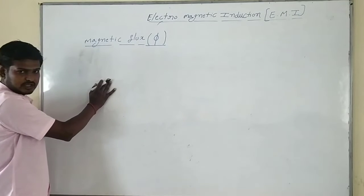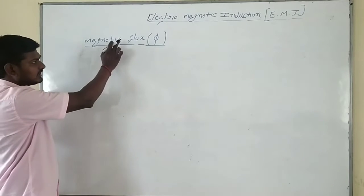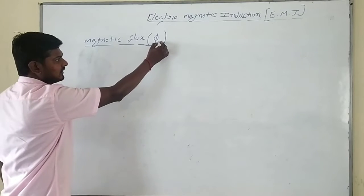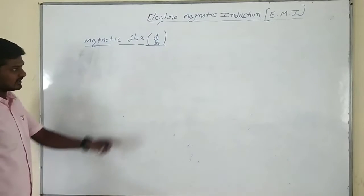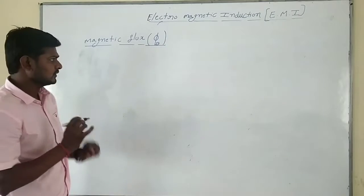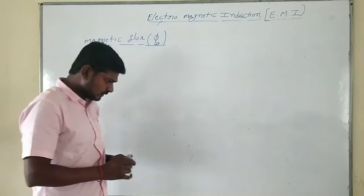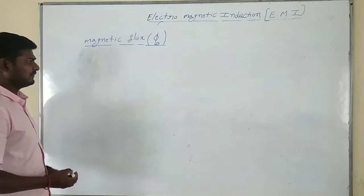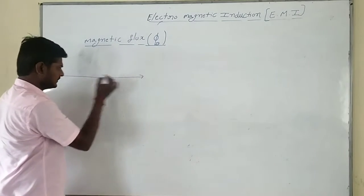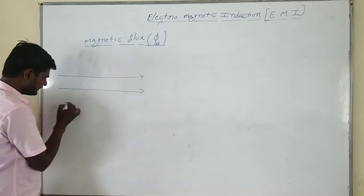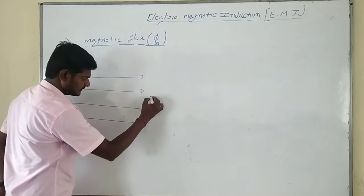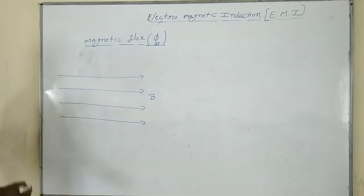In the first chapter you already studied about electric flux. Electric flux is denoted by Φ with suffix E (Φ_E). Similarly, magnetic flux is denoted by Φ with suffix B (Φ_B). We will use both these notations. Now let us define magnetic flux. I am going to take a magnetic field region of strength B.